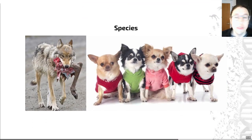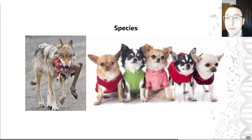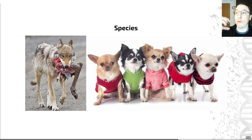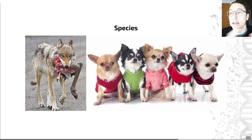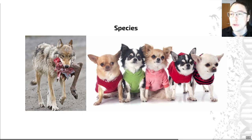With enough time, differences can build up between two populations within a species. Those changes can become noticeable, and at some point those two populations can no longer interbreed. That is the point at which, under many — but not all — species definitions, we would consider those two groups to be different species.